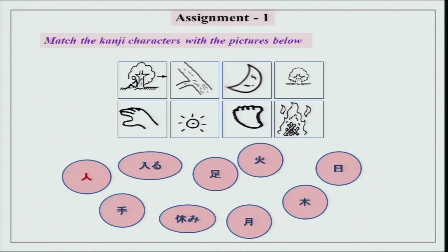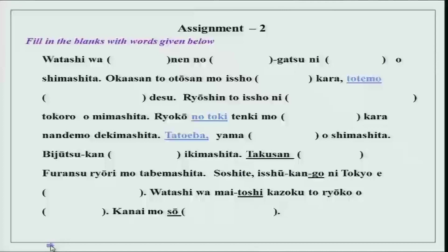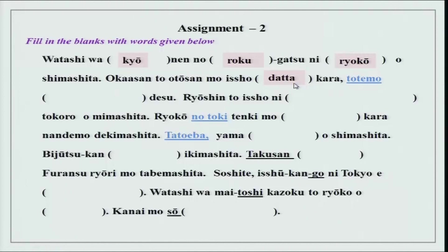Now we have a few fill-in-the-blanks with words given below. Watashi wa kyonen no roku gatsu ni ryoko wo shimashita. Okaasan to otousan mo issho datta kara — plain form datta kara — because they were together. Tottemo — very, exceptionally — tanoshikatta desu. Tanoshii in past tense is tanoshikatta. I was very, very happy.